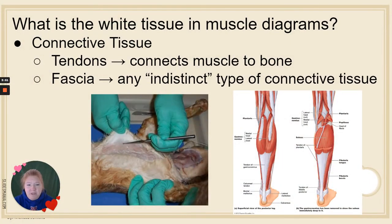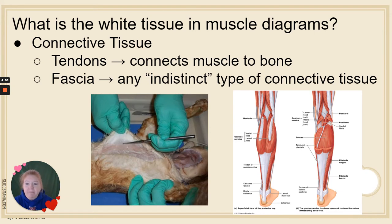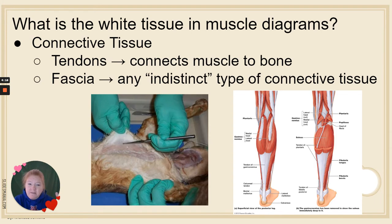When we see pictures of muscles, you almost always see white tissue. That's connective tissue. In a lot of cases it's a tendon, which connects muscle to bone. Sometimes it's indistinct, and in that case it's called fascia — an indistinct type of connective tissue surrounding muscles. You might see that more when doing an actual dissection rather than in an illustration.